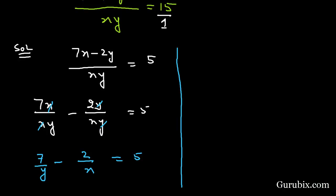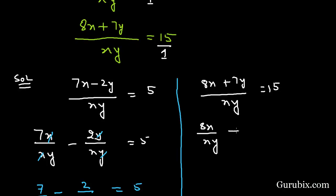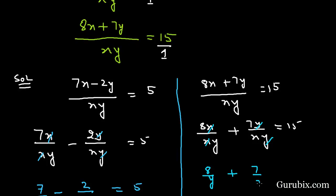Now let us consider the second equation: 8x plus 7y over xy equals 15. We can cancel x with x and y with y, giving us 8 over y plus 7 over x equals 15.